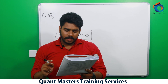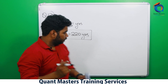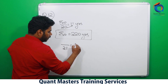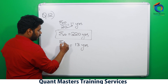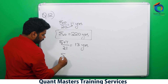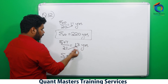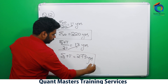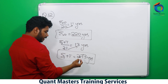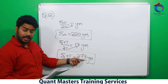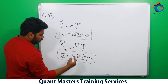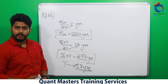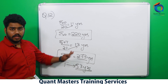When the teacher was added, the average became 13 years. Now there are 21 people. The sum of students plus teacher = 21 × 13 = 273 years. The sum of only students was 220 years. The difference is 53 years — that is the age of the teacher.